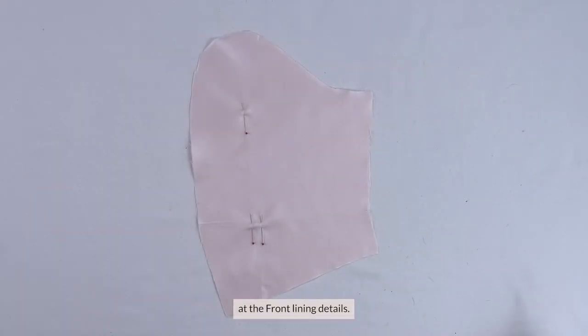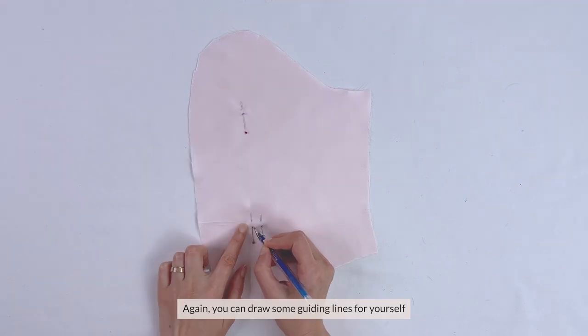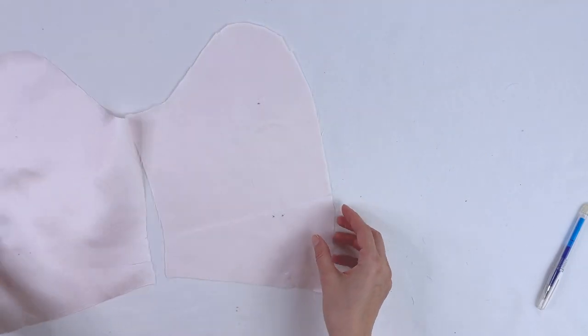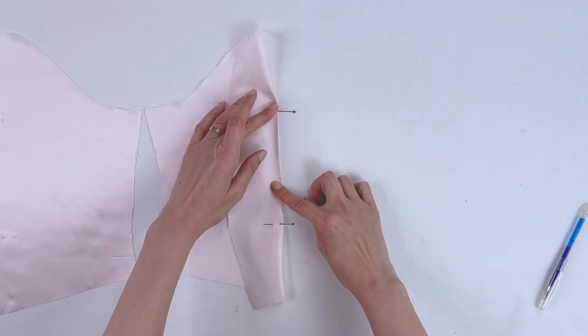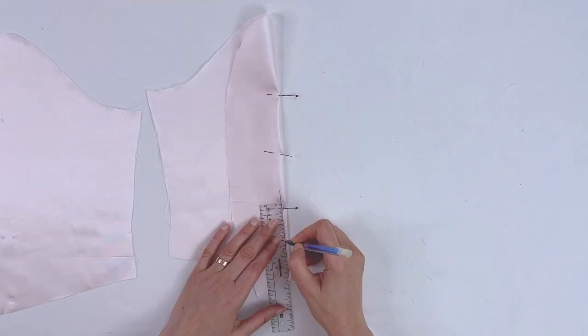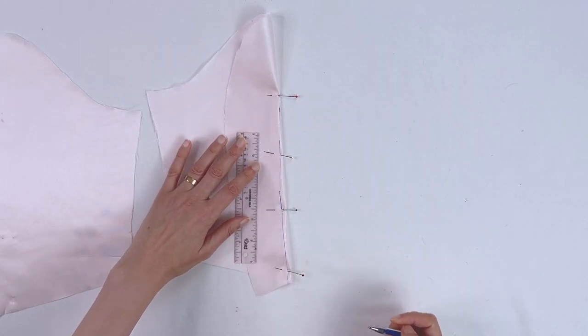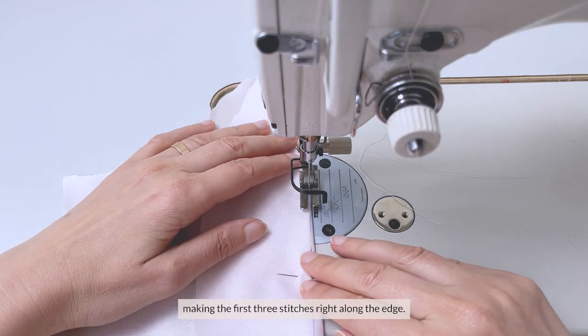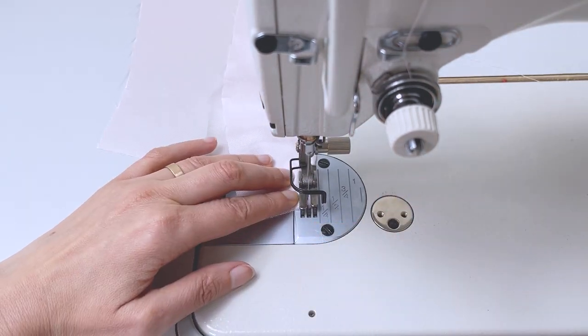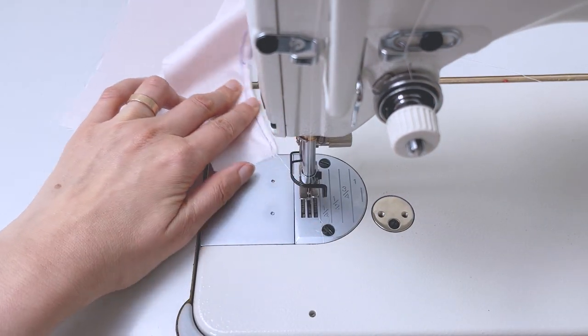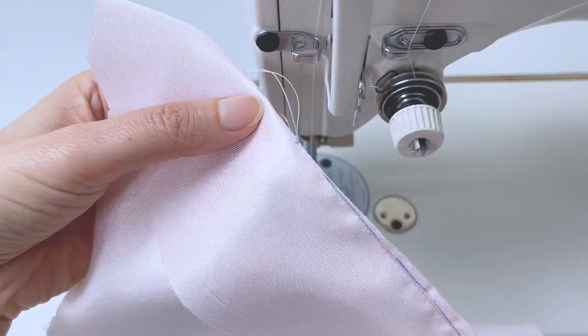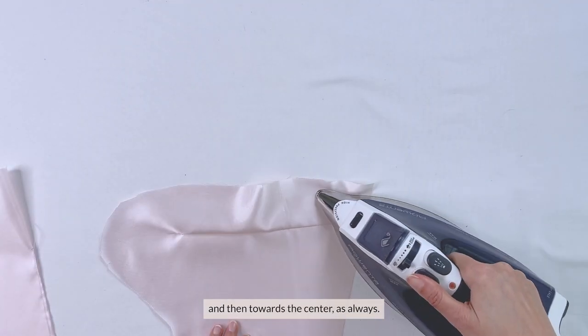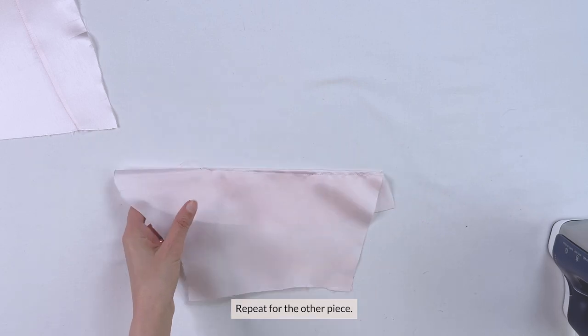Transfer and pin the darts at the front lining details. Again you can draw some guiding lines for yourself to ensure a beautiful dart. Sew the darts making the first three stitches right along the edge. And then press them. First flat and then towards the center as always. Repeat for the other piece.